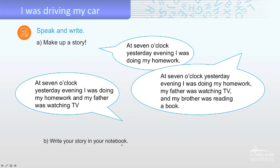Write your story in your notebook. What happened? Use the past progressive. Mention the time, for example at 5 o'clock yesterday afternoon, I was playing football with my friends. Say the time, the period, use the past progressive and add your own words. It's very easy.